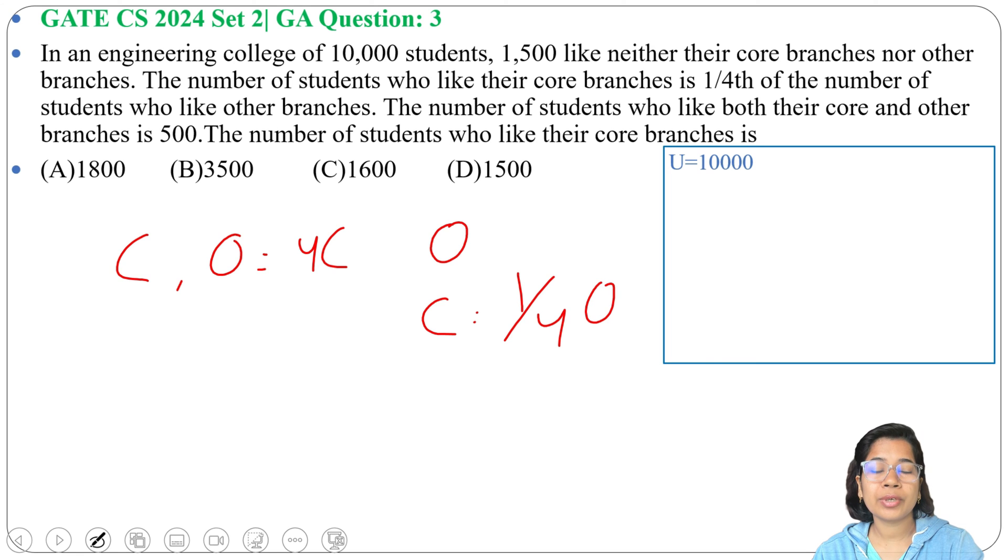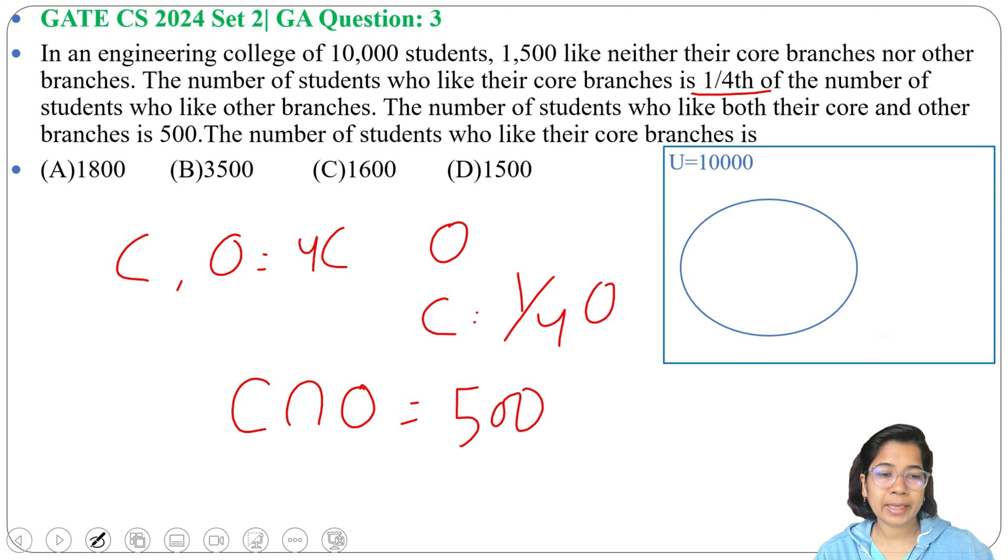The number of students who like both core branches and other branches is 500, means C intersection O equals to 500. So we take two sets, one is C and another is O, and 1,500 students who don't like any of this will be out of this.